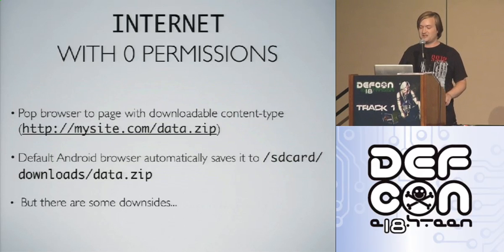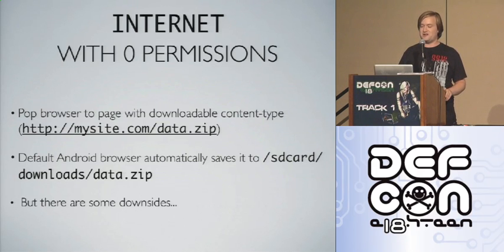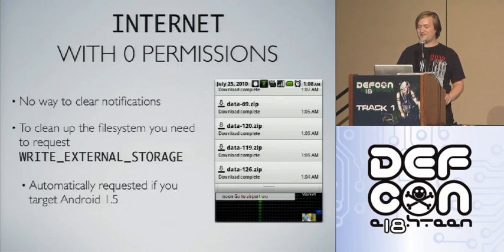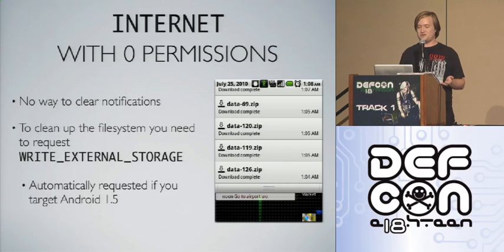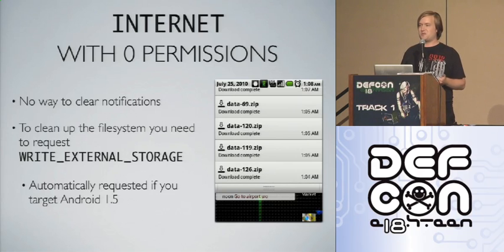But what about two-way communication? The simplest approach is to pop open a browser to a page with a downloadable content type — it downloads a zip to the SD card downloads directory. Anyone can read the SD card with no permission required. Downsides: it creates many notifications and files on your SD card. A better approach: a custom URI receiver. Google Maps registers on the geo: protocol — geo:latitude,longitude pops open Maps. We can do the same thing with our application using no permissions.